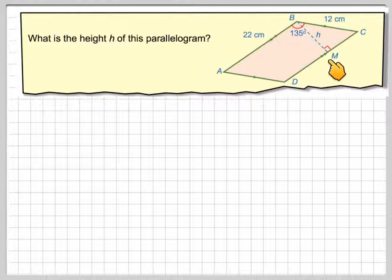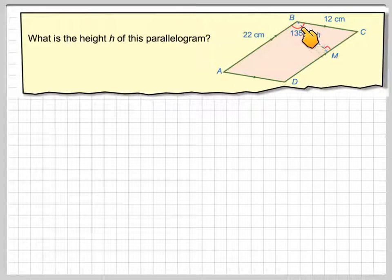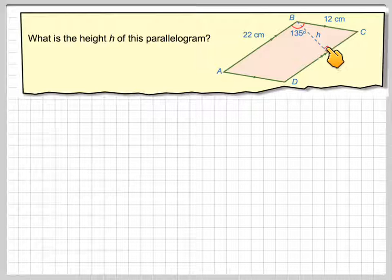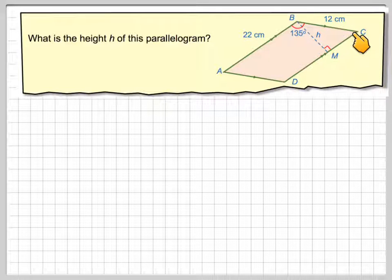So we've got this parallelogram, and we're being asked to find this length here, h. h will cut this side of the parallelogram at a right angle. So we're going to have to use this right angle triangle and a bit of trig here.